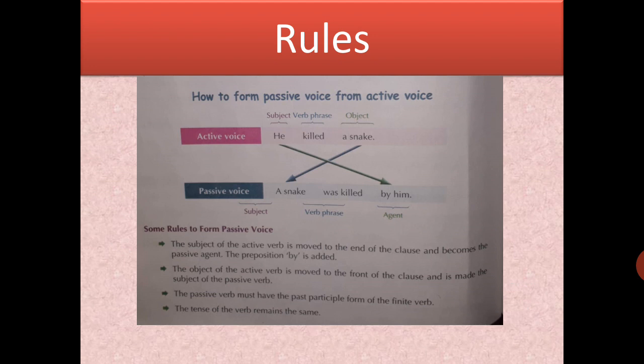The common rules are: first, the subject becomes the object of the sentence and the object becomes the subject. Second, the tense will remain the same — if it is in simple present, the passive voice will also be in simple present. Third, the verb will always be in third form — that will always be the past participle. It will always be V3, verb third form.